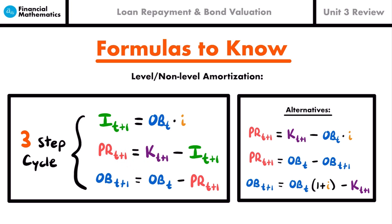To find the principal in a payment, you subtract out the interest and what's left is the principal. Once you calculate the principal at time t+1, you can find the next outstanding balance OB_{t+1} by taking the previous outstanding balance and subtracting the principal at t+1. Then the cycle repeats — find the next interest by taking that outstanding balance multiplied by the interest rate, then the next principal, then the next outstanding balance, continuing until you reach an outstanding balance of zero.